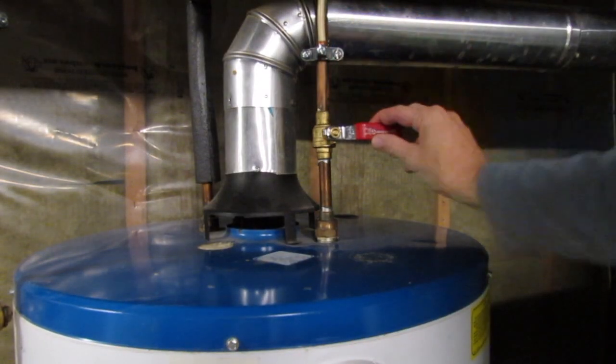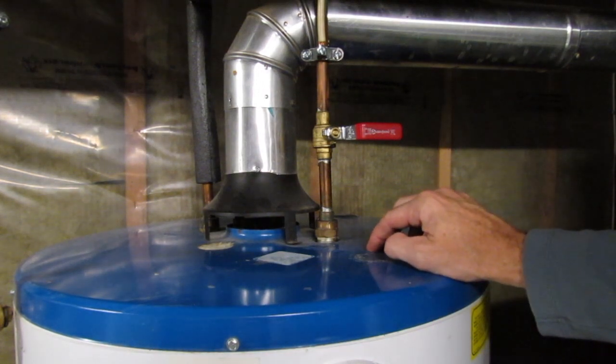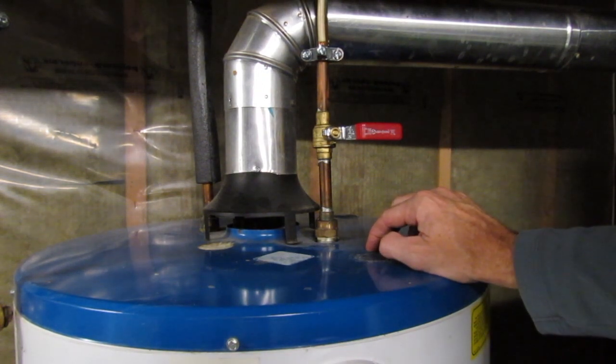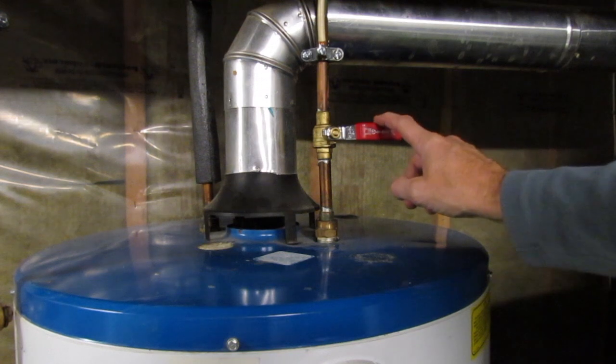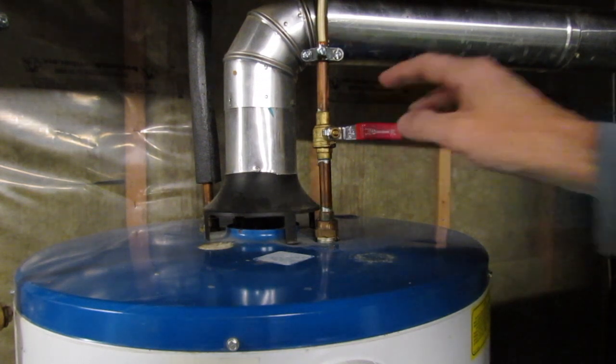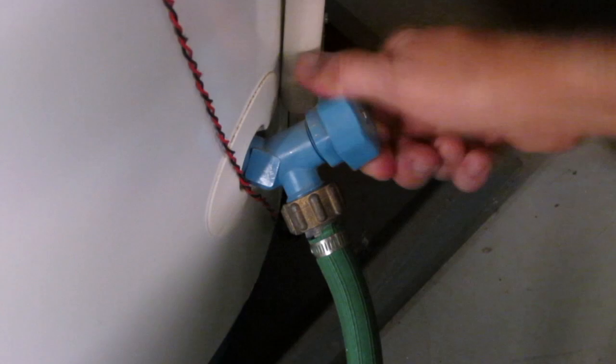After about five minutes turn the water off. At this point you can look at the water coming into the bucket and see if the water is starting to come clear. If it hasn't just repeat the step again by turning this back on for another five minutes and back off. When you're finished turn the valve off and remove the hose.